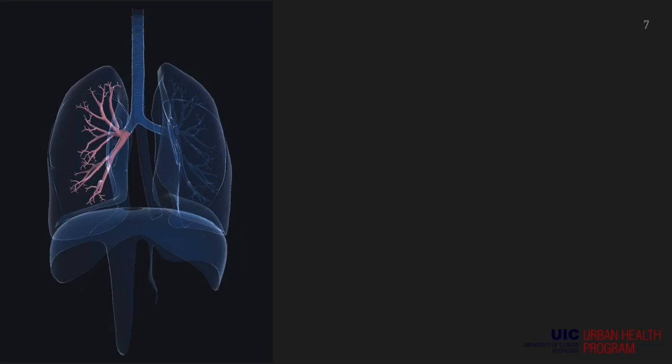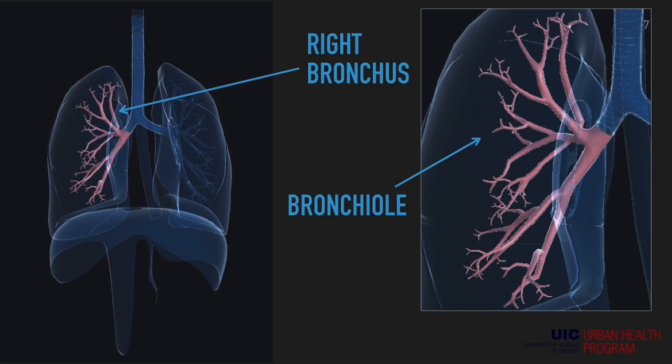From the trachea it divides into two bronchi: right bronchus and left bronchus. Today we're focusing on the right bronchus. Through the different levels of bronchi — primary, secondary, and tertiary — we finally make it to the smaller branches known as bronchioles.